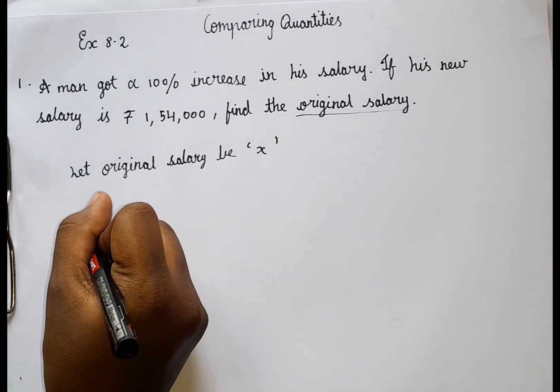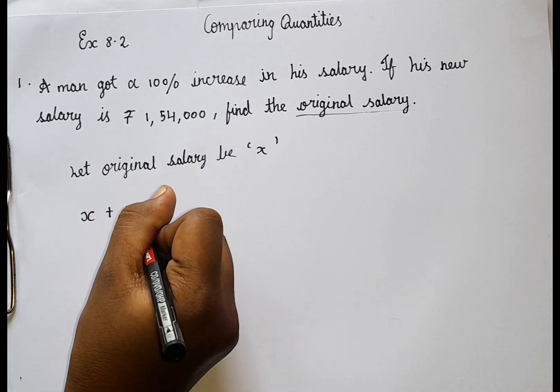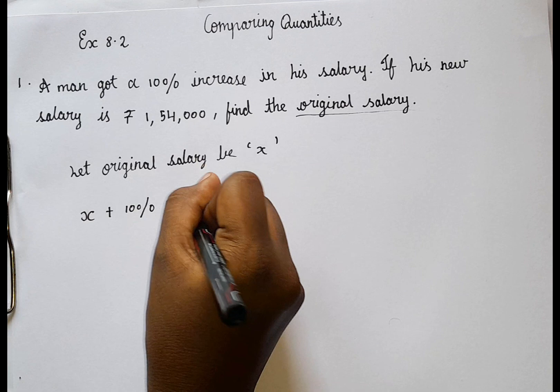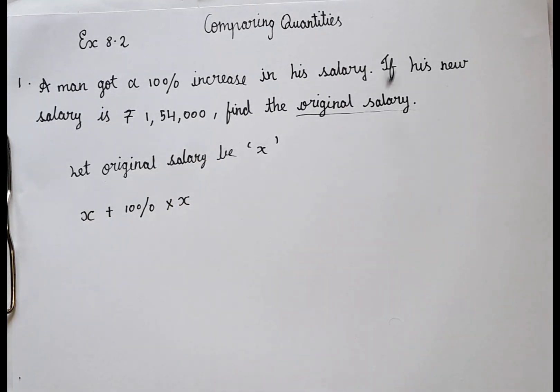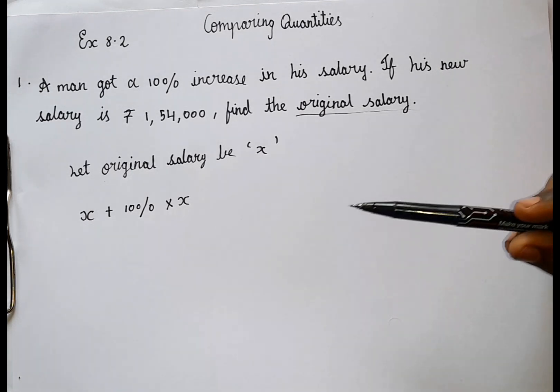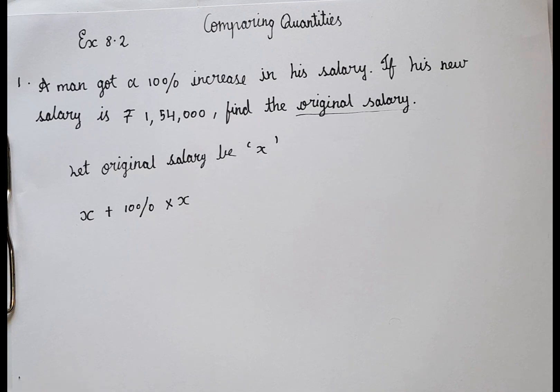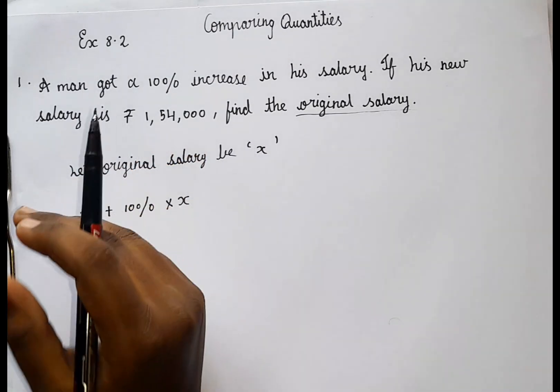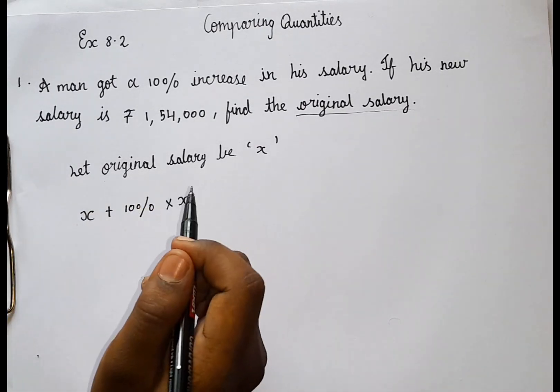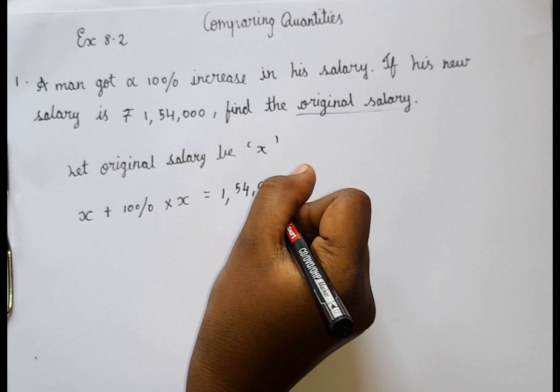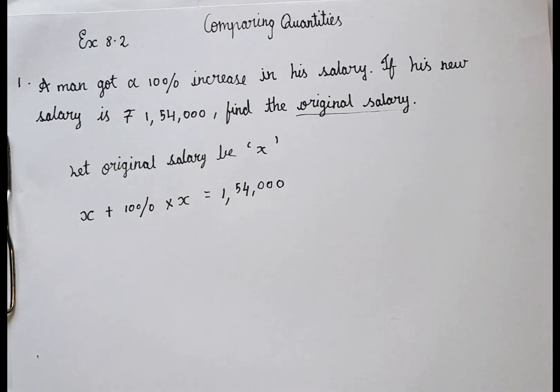So x, original salary plus 10% into x. Because 10% from the old salary. That's why I wrote into x. This is really important. x plus 10% into x, because 10% increase from the old salary. So 10% into old salary is equal to 1,54,000. Now we have made an equation. Now we are going to simplify it more.